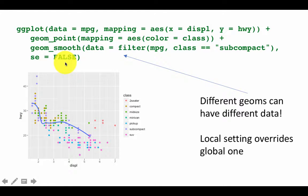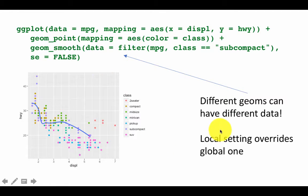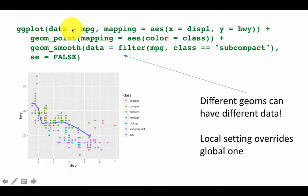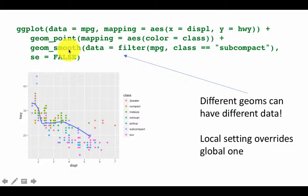When you say se=FALSE in geom_smooth, you're saying don't show the confidence intervals. So it's possible for different geoms to have different data. The global setting sets data as mpg, so geom_point uses mpg because we didn't specify otherwise, but for geom_smooth we've given a different filtered dataset, and that works fine.